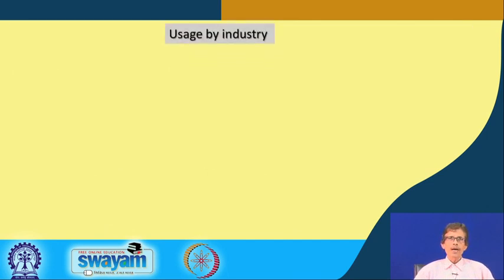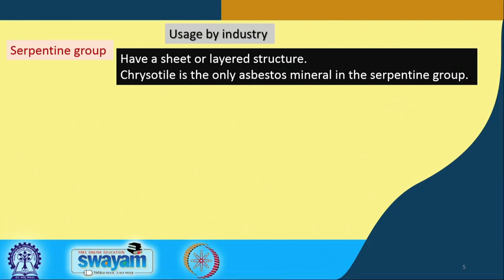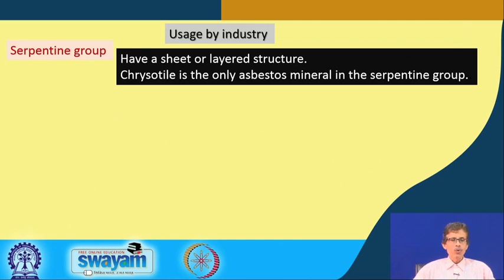We will continue in our next class to see how we use this in the industry. We will slowly see from one group to another - we have just now told you that we can have the serpentine group which has a particular type of structure. The serpentine group has a sheet or layer structure, and that sheet or layer structure can be utilized for one particular purpose. Chrysotile is the only asbestos mineral in the serpentine group. We can have a huge table but will not bother about all these complicated names - we will take one or two examples to have the basic structure and will be interested to know the corresponding chemical composition, which we will see in our next class. Thank you very much.